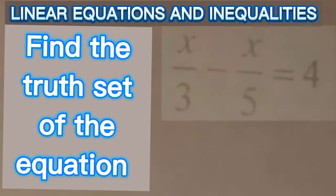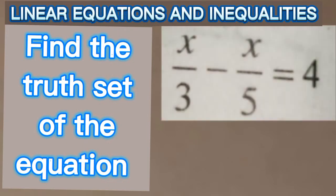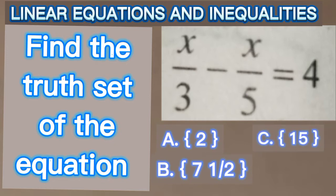Find the truth set of the equation x divided by 3 minus x divided by 5 equal to 4, and we are given the options A, B, C, and D. Which of them do you think is correct? Let's solve together.